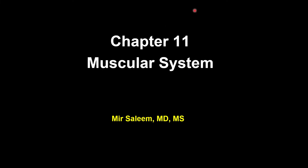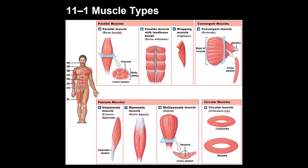Chapter 11 is about the muscular system, which has two parts: axial and appendicular. There is some general information about the muscular system, including a classification based on the way muscle fibers run. The first type is called parallel muscles, where the fibers run parallel to the long axis of the muscle.